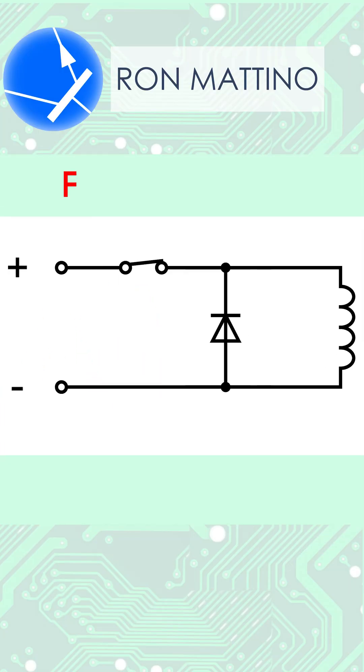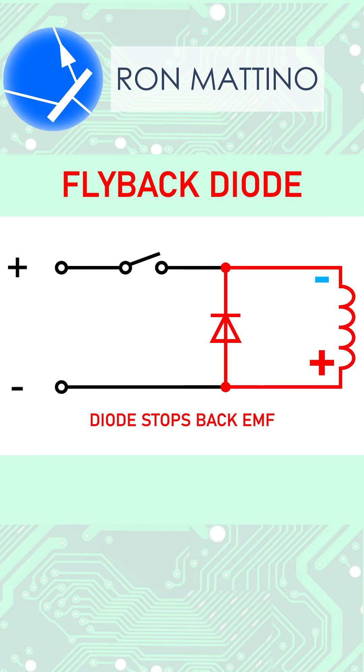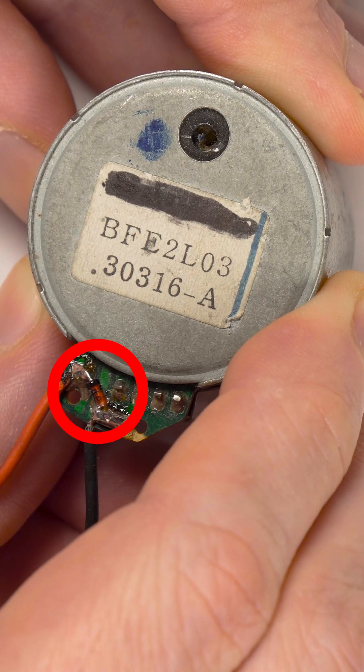A flyback diode is a diode connected across an inductor to eliminate back EMF, which is a sudden voltage spike of reverse polarity seen across an inductive load when its supply current is suddenly interrupted. You can see flyback diodes in motors and relays.